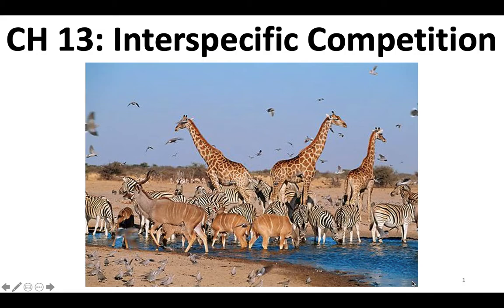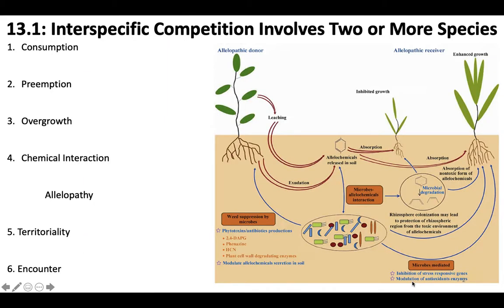This is going to be the last lecture for exam two, so as always make sure to pull up your learning goals from the study guide and fill them in as we go along. We've talked about intraspecific competition — competition between individuals of the same species — and interspecific interactions between two different species. Now let's talk specifically about competition between two different species. There are six main types of interspecific competition we'll go through in this lecture.